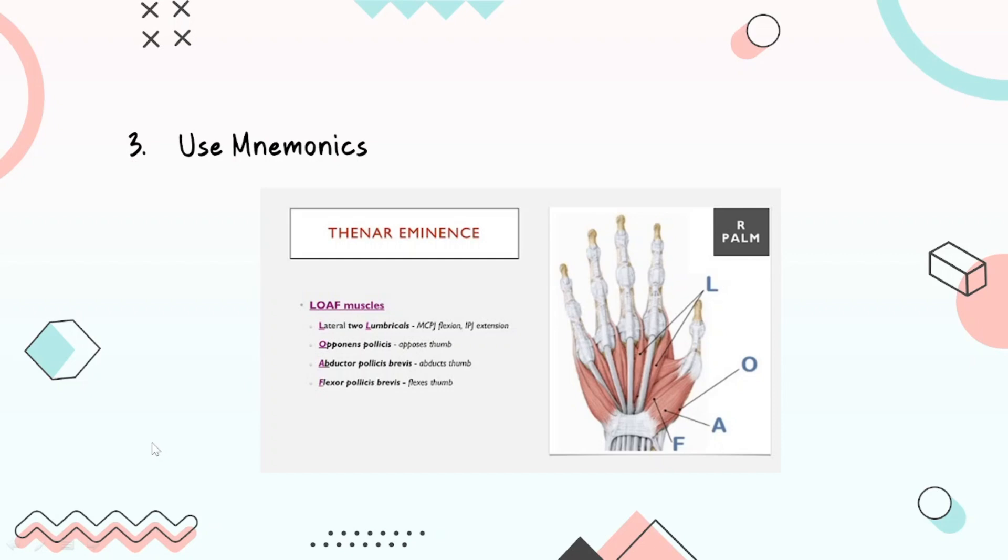The third tip that helped me a lot was mnemonics. Mnemonics are great, mnemonics can be used for every single thing you want to learn. An example is the LOAF muscles. We know that the nerve supply of the hand is mostly ulnar nerve except the LOAF muscles which are supplied by the median nerve.